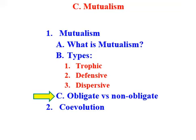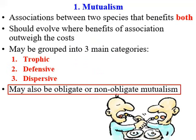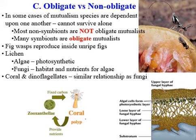In an obligate relationship, they've gotten to the point where they can't live without each other. In a non-obligate relationship, that's not the case. On Monday we looked at different types of mutualism — trophic, defensive, and dispersive mutualistic relationships. Now let's look at this idea of obligate versus non-obligate.